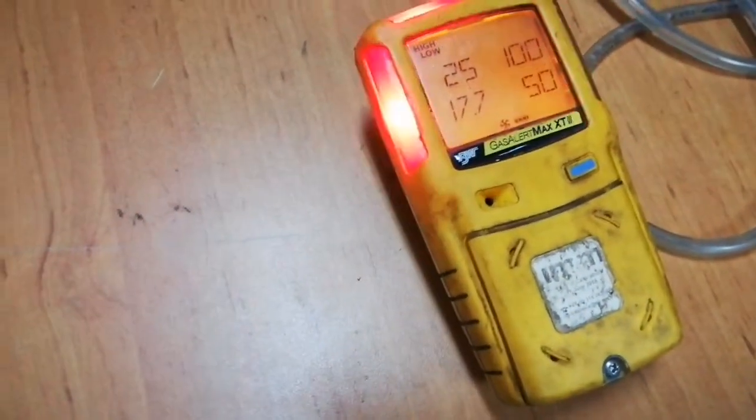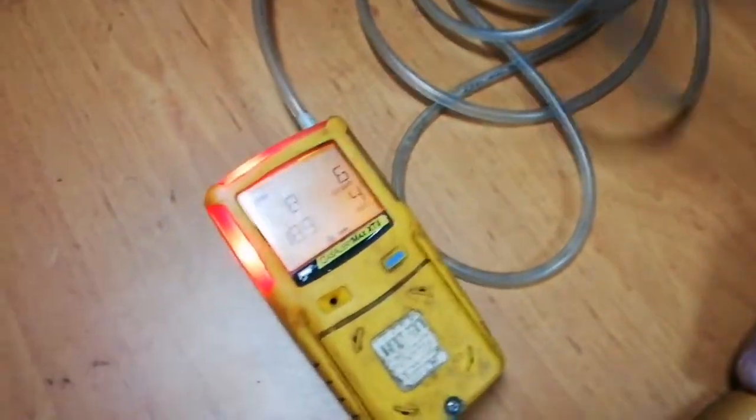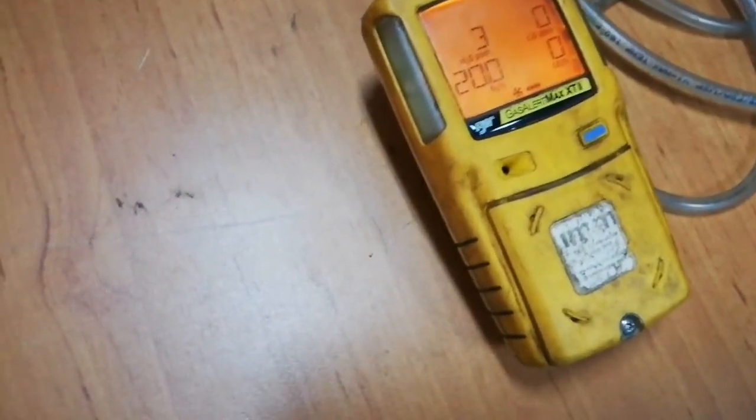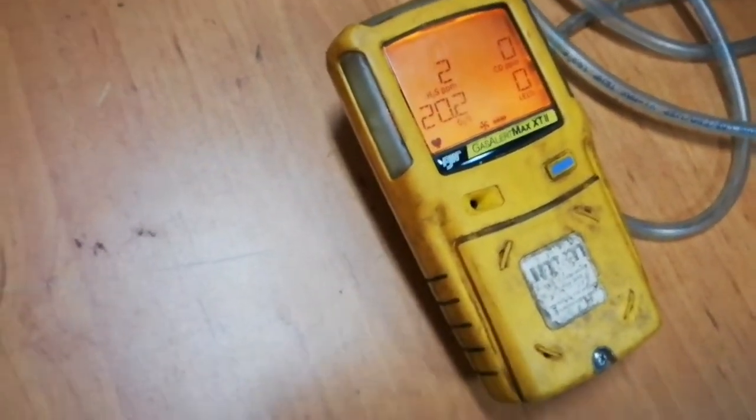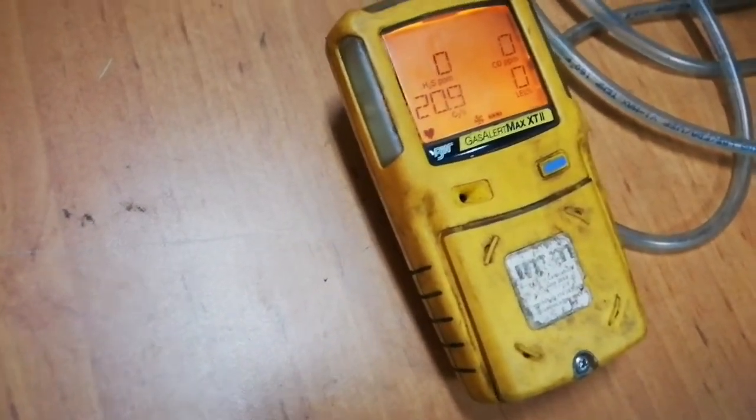Now we have to check the present atmosphere condition. Slowly the figures will be reduced. Here you can see H2S becomes zero, carbon monoxide becomes zero, and LEL becomes zero. Only oxygen is showing 20.9.